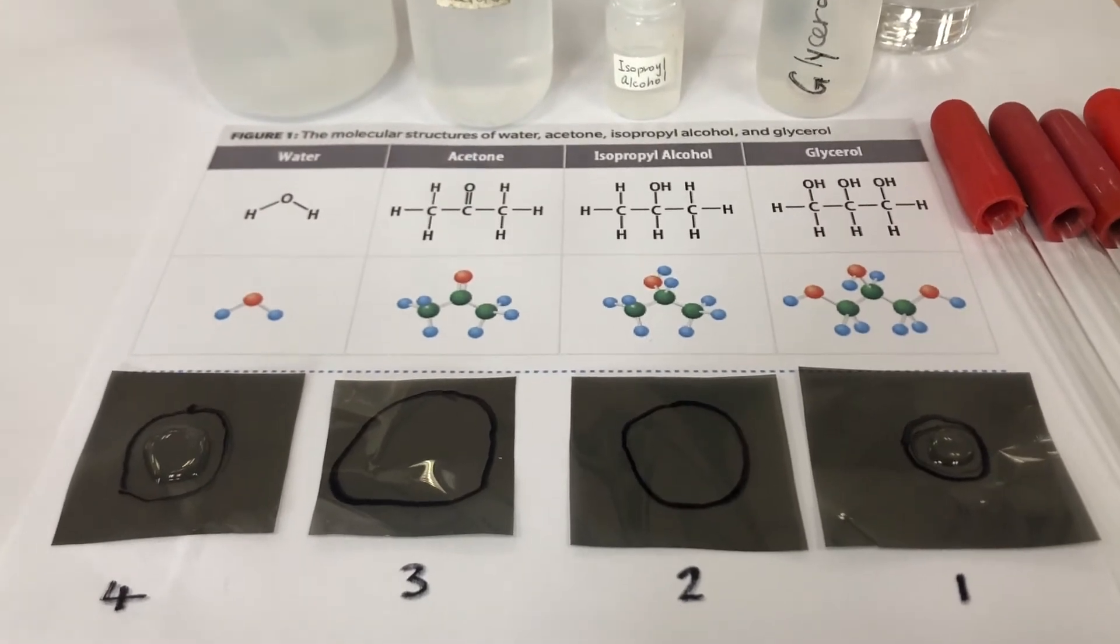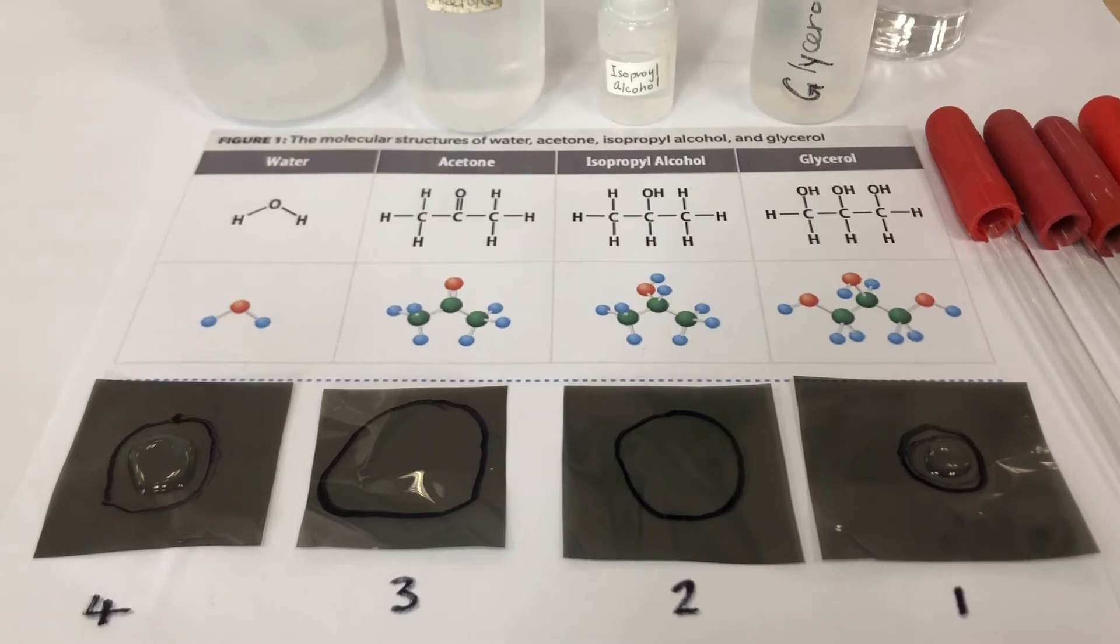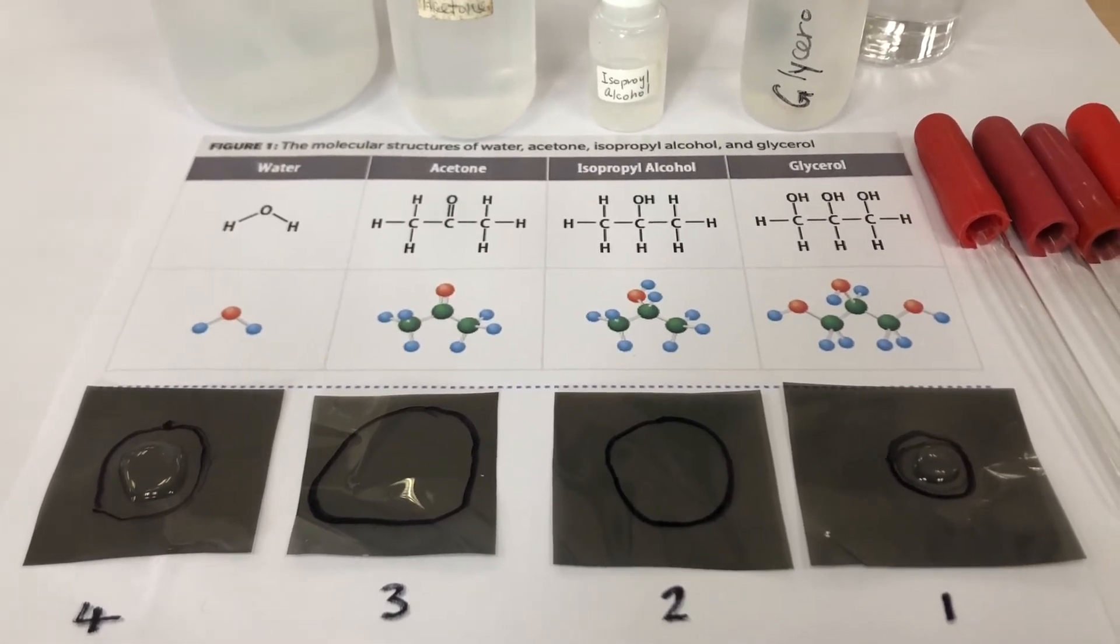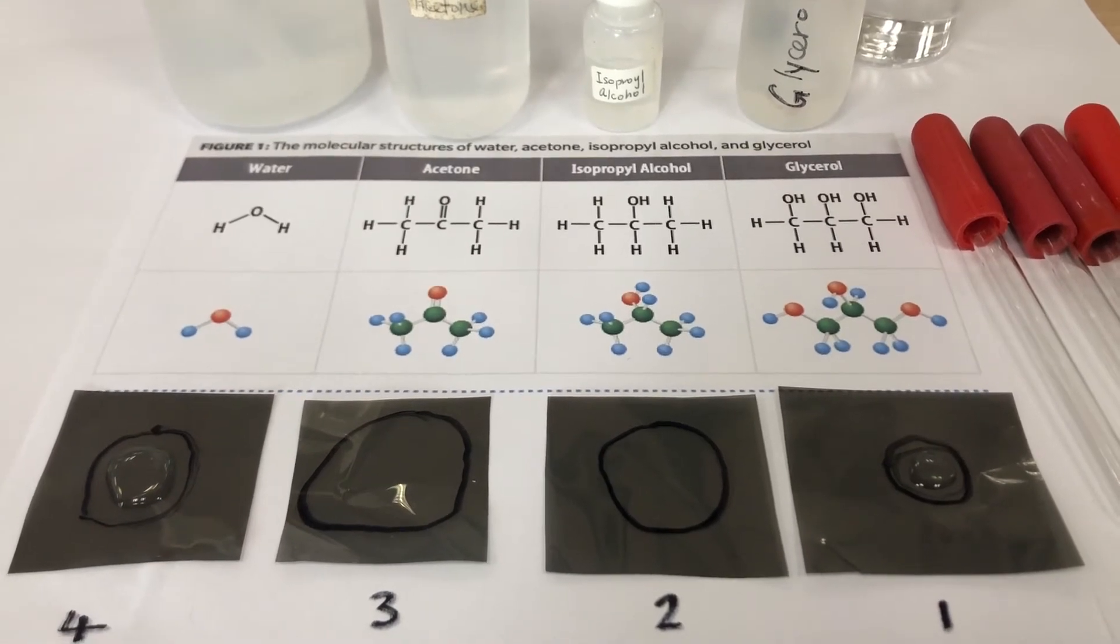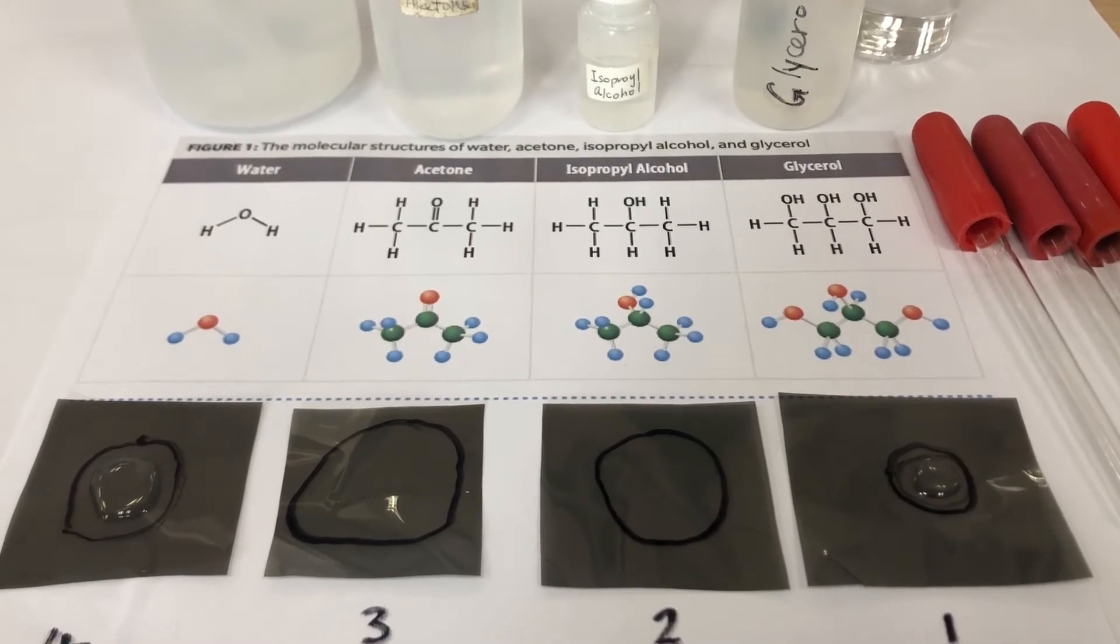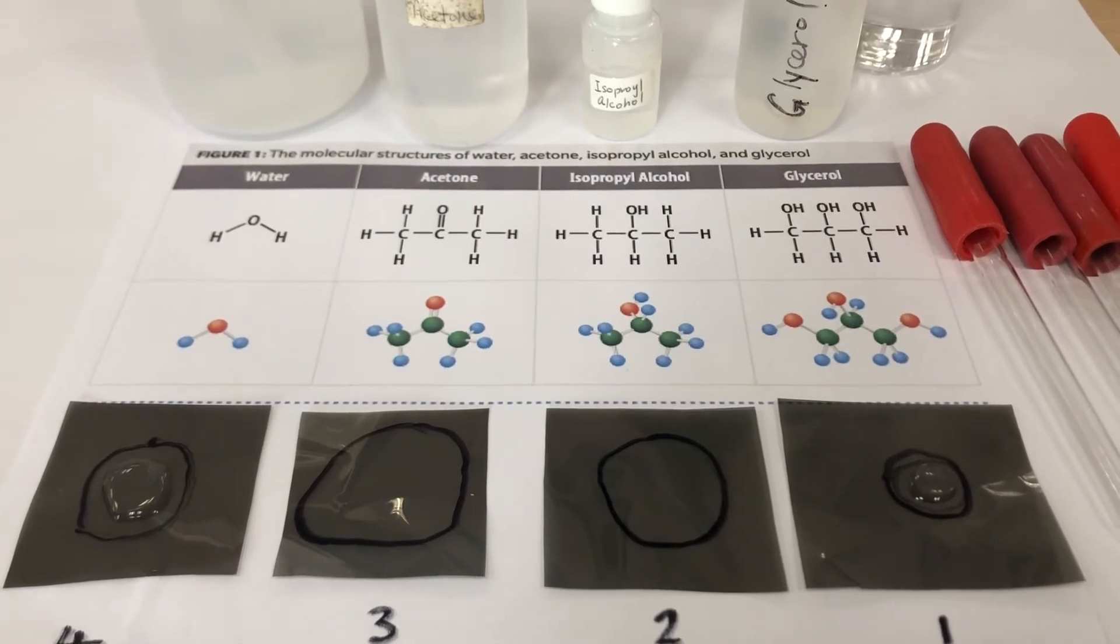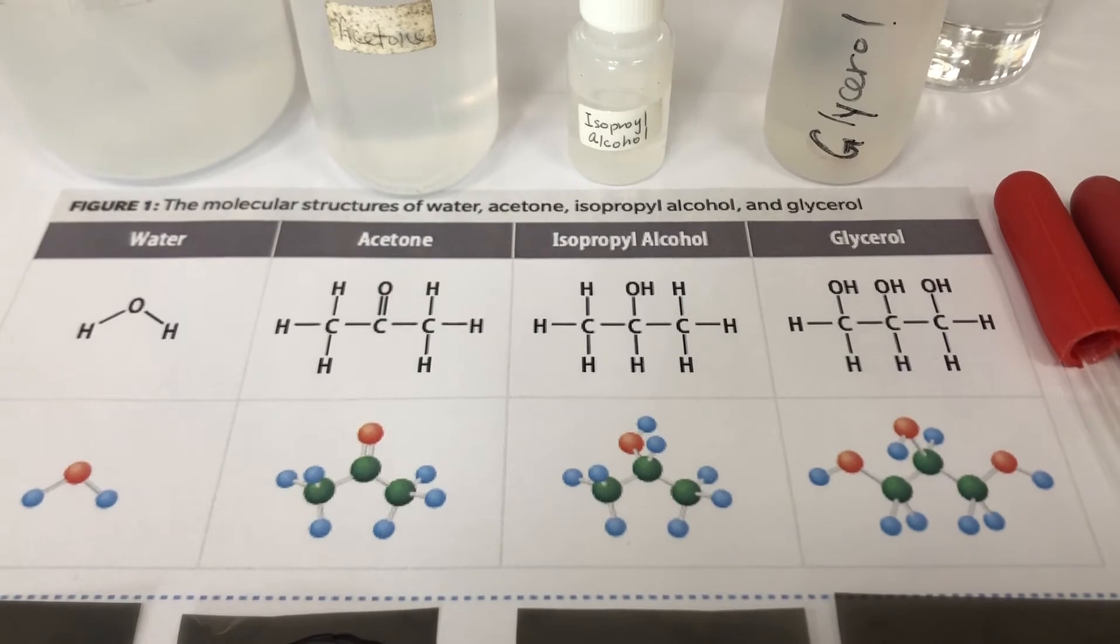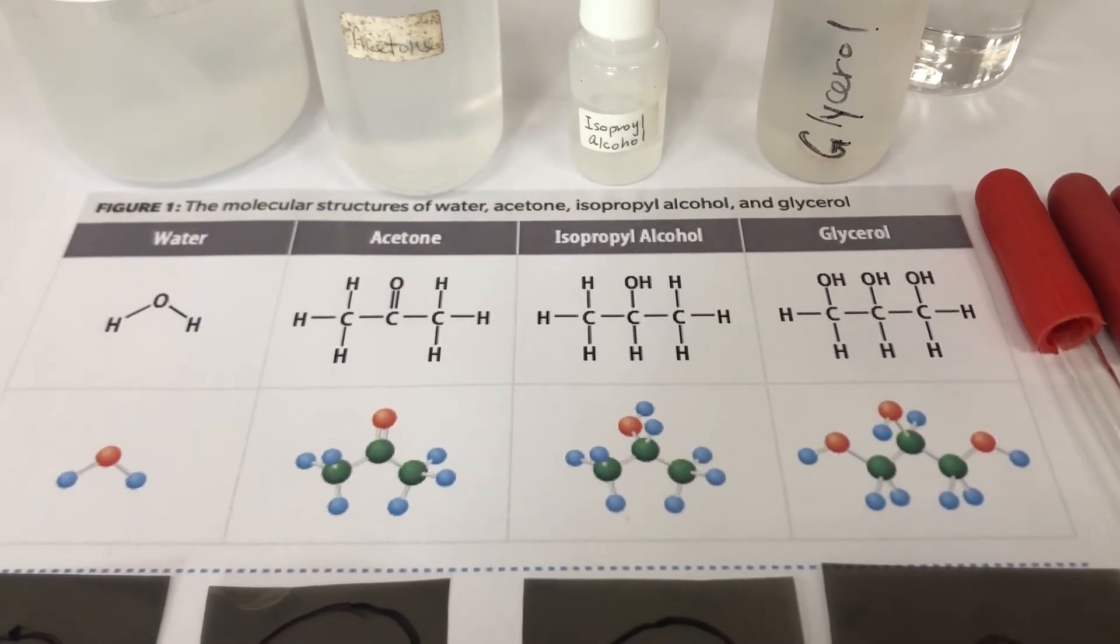So I've rated them. You can see that glycerol demonstrated the most surface tension. The molecules were very, very attracted to each other. Water was in second place, and then it was alcohol followed by acetone. And there's a rationale for that, because we can look at the structures and we can actually make some predictions about why they behave in that certain way.